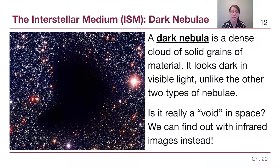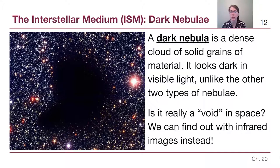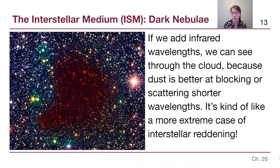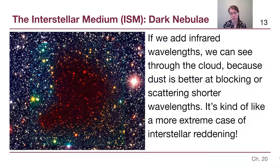The last type is a dark nebula — a dense cloud of solid grains of material, much more dust than gas, that looks dark in visible light. A very famous example is Barnard 68. It almost looks like someone has cut a hole out of space. It's not a black hole at all; it's just a dark cloud. We can use infrared light to look behind it, and when we do, we see just as many stars behind it as to the side — the cloud is simply blocking the visible light. This is a more extreme case of interstellar reddening: all visible colors are scattered away, but the longer-wavelength infrared light can still pass through.